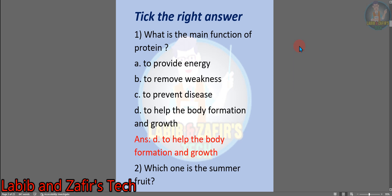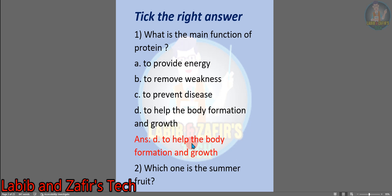Now we have some MCQs — take the right answers. Number 1: what is the main function of protein? A, to provide energy. B, to remove weakness. C, to prevent disease. D, to help the body formation and growth. The answer will be D, to help the body formation and growth.